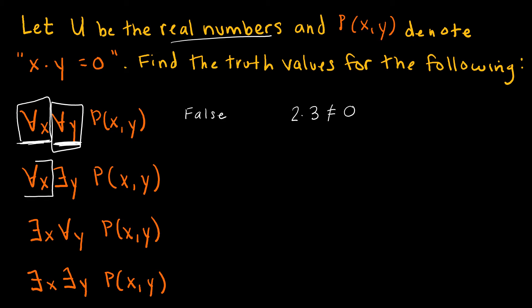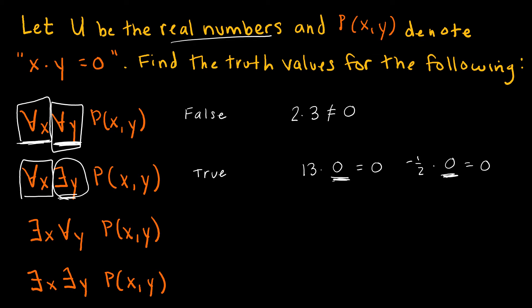The next proposition: for all x, there exists some y such that x times y equals 0. For any x I can think of — say 13 or negative one-half — can I find a number y that gives me a product of 0? Yes. In this example, that y happens to be the same value each time, but that's not necessary for the quantifier. It is necessary here because anything times 0 is 0, but the quantifier doesn't require that. This proposition is true.